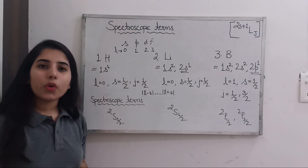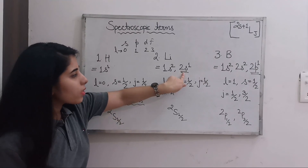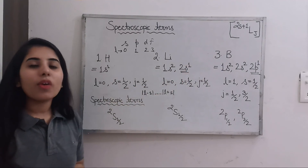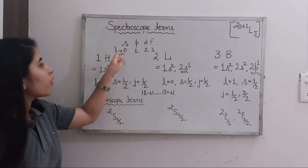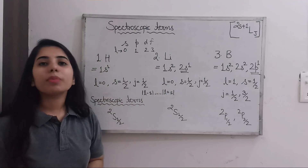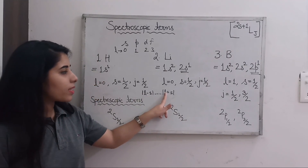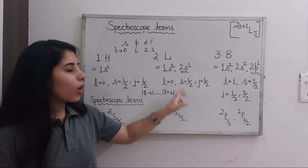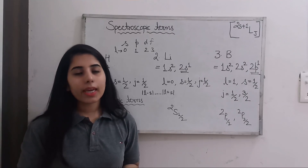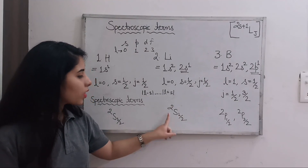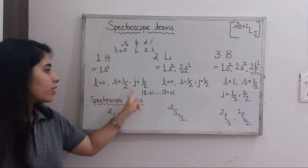Now let's talk about lithium. The electronic configuration for lithium is 1s2 2s1. We look at the last term, which is 2s1. The value of L is again 0 because we have the s orbital. The spin S is 1/2. The value of J, from |L − S| to L + S, again gives just 1/2 in both cases. So the spectroscopic term for lithium is also 2S_{1/2} — the same as hydrogen since all the values are the same.